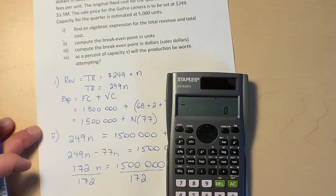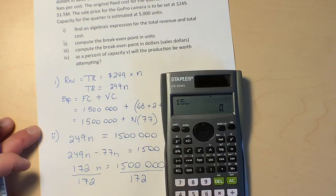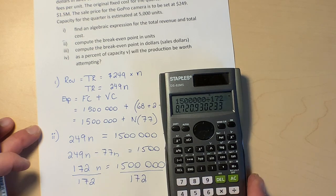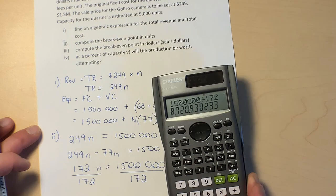Let's do that: 1.5 million divided by 172, and that equals 8,720.9.